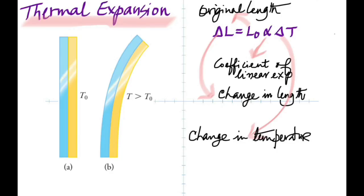The unit of alpha: since change in length and original length are both in meters, they cancel, and delta T is in Kelvin, so alpha is per Kelvin, or equivalently per degree Celsius.